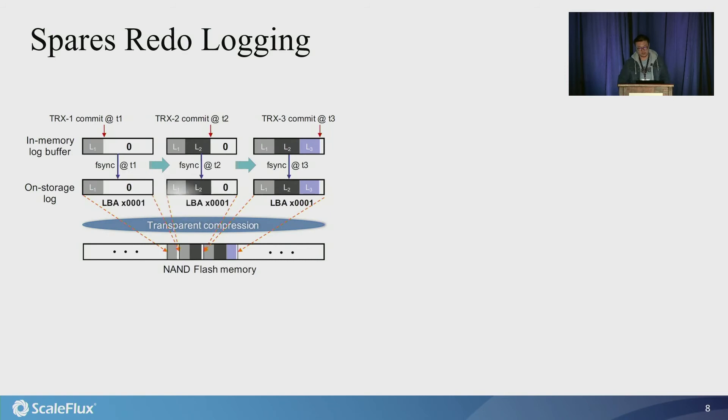The third design technique is improving the redo log write amplification. So this is the conventional implementation of redo logging, where log records are tightly packed into redo log, and consecutively, under some consecutive transactions, commits could flush redo log to the same LBA multiple times.